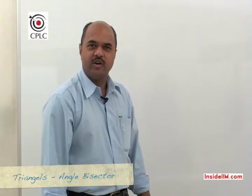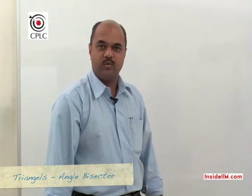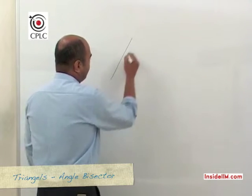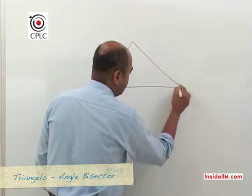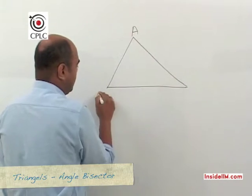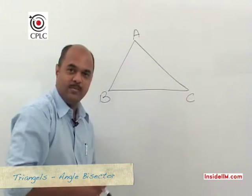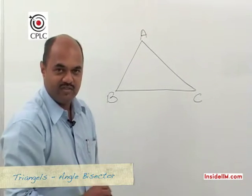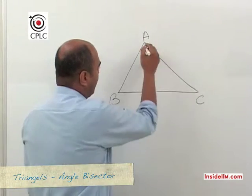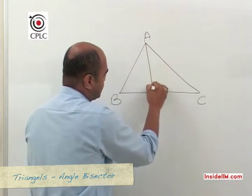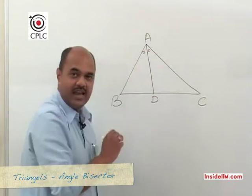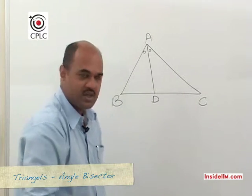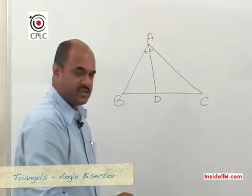Let's now look at the angle bisector. In triangle ABC, an angle bisector is a line which bisects an angle of the triangle. If we draw line AD which bisects angle A — dividing it into two equal parts — then AD is called the angle bisector.